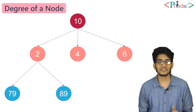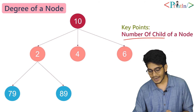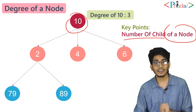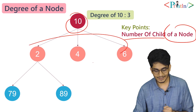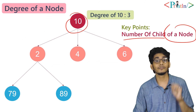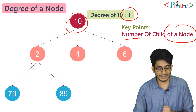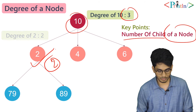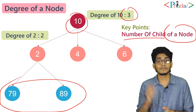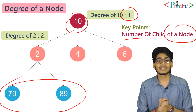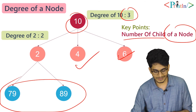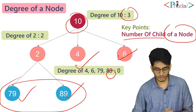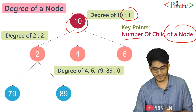Now we'll talk about the degree of a tree. The degree of a node is the number of children of that node. The degree of node 10 is 3 because it has 3 children. The degree of node 2 is 2 because it has 2 children. The degree of nodes 4, 6, 79, and 89 is 0 because those nodes have no child nodes.